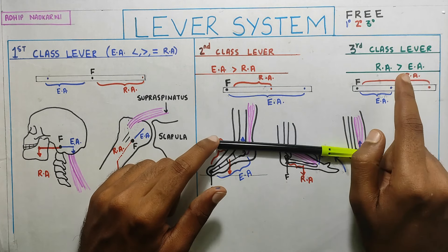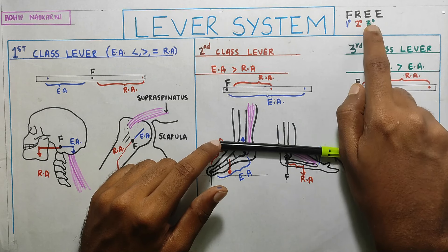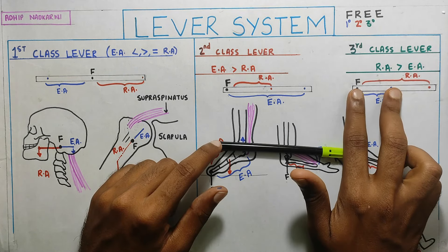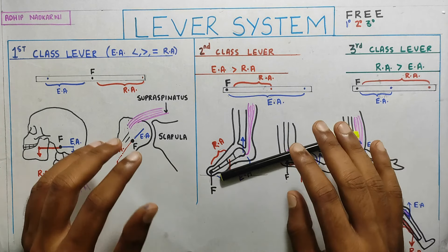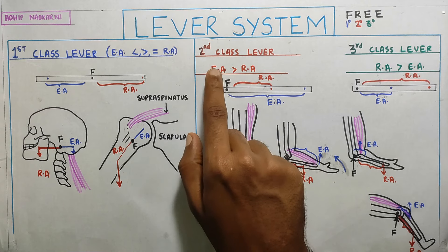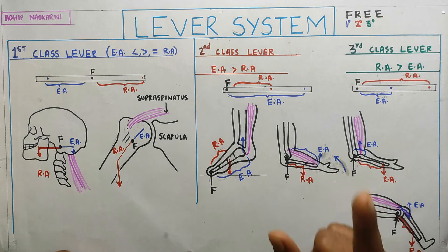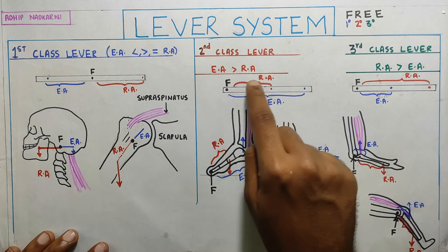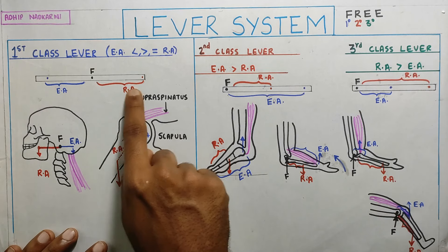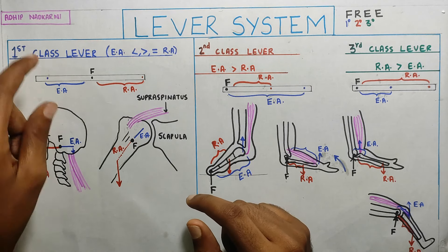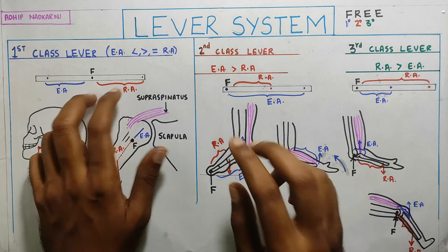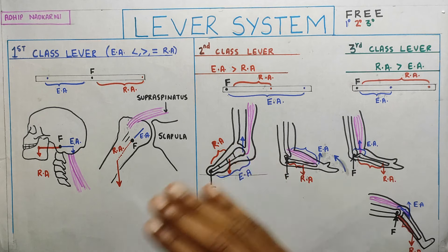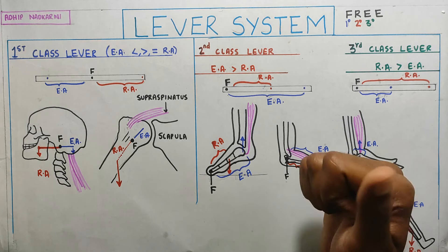In the third class lever system, the effort arm is in the center, so the effort arm will be short and the resistance arm will be big. To remember which is which: effort arm always wins over the resistance arm. The resistance arm is shown in red — it always resists but never wins — while the effort arm in blue always wins.